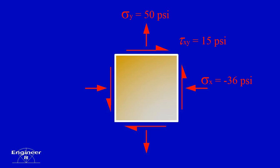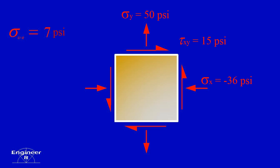From the element, we can begin calculations to draw Mohr's Circle. Step 1 is to compute the average normal stress, which is simply the average of the normal stresses in the x and y-directions. The average normal stress here is equal to 7 psi. Step 2 is to calculate the radius, which is the square root of one half of the difference between the stress on the x-face and the stress on the y-face squared, plus the shear stress squared.